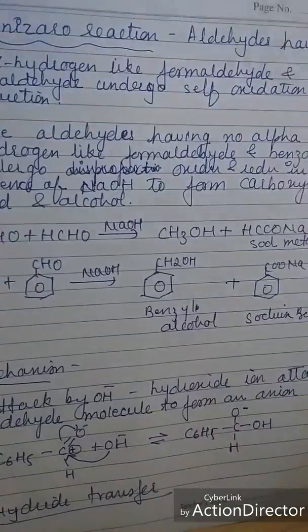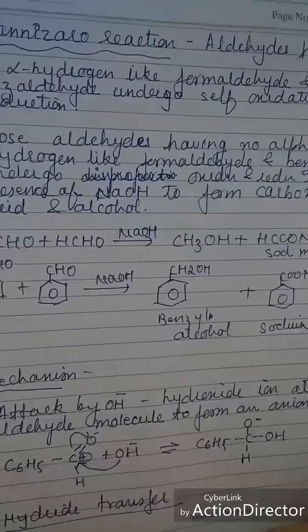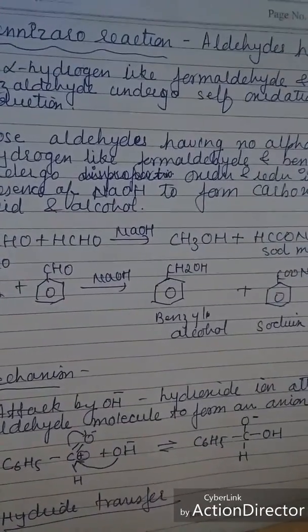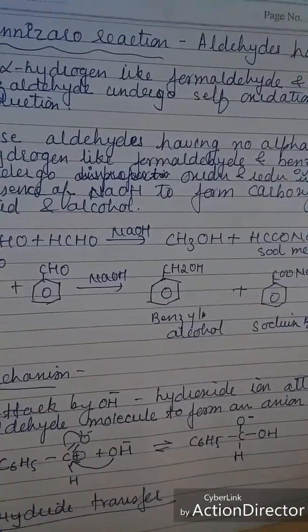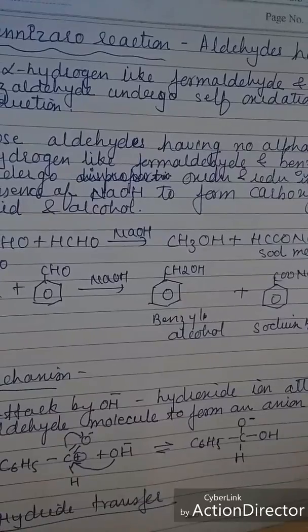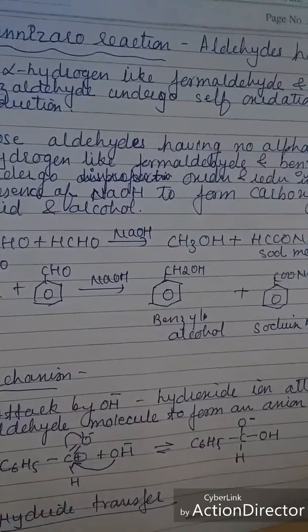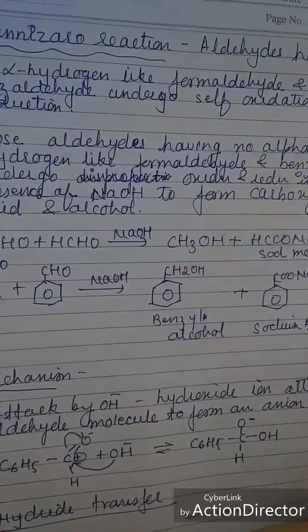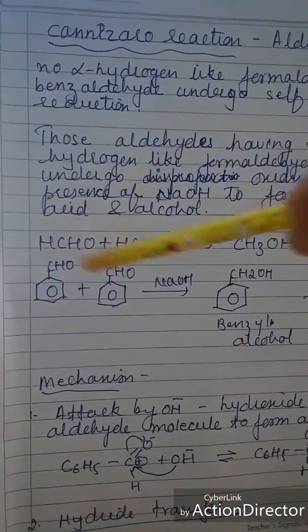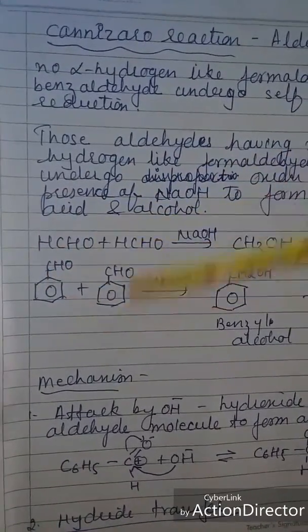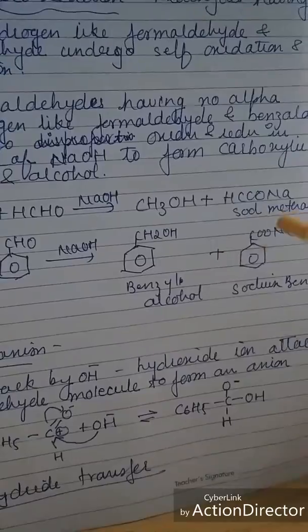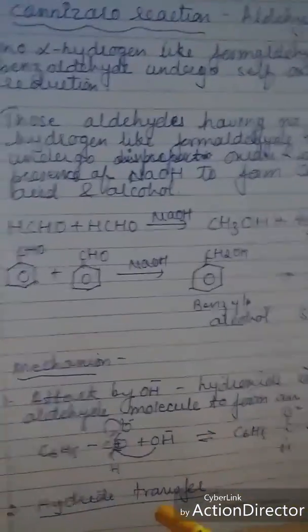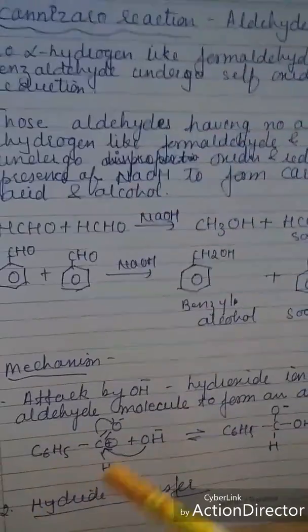Next let us talk about the Cannizzaro reaction, named after the scientist. In this, alpha aldehydes which do not have alpha hydrogen, like formaldehyde and benzaldehyde, undergo self-oxidation and reduction in the presence of NaOH to give a carboxylic acid and an alcohol. For example, two molecules of benzaldehyde give benzyl alcohol and benzoic acid. The first step of the mechanism is a nucleophilic attack.